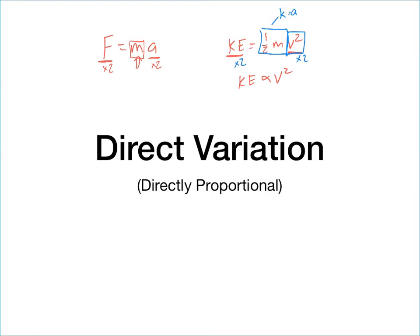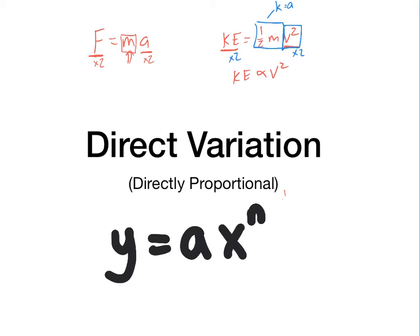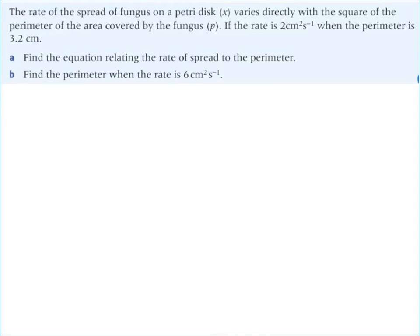The basic idea is that when we have direct variation, we're going to end up with something where it's y equals some constant of proportionality times x to some power. Be careful because that power can be a whole number, but it can also be a fraction. It could be one-half, meaning it's a square root. As long as we can create a linear relationship between y and some power of x, then we'll say that y and x to the n vary directly, or that they're directly proportional.